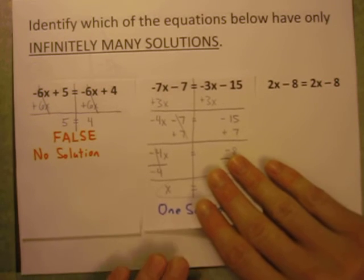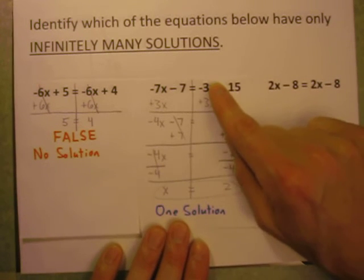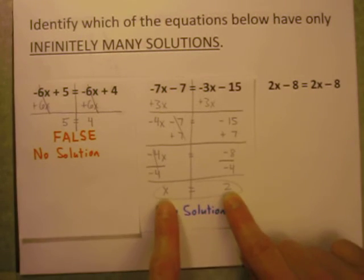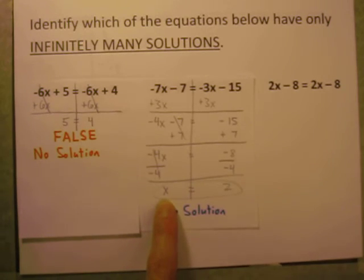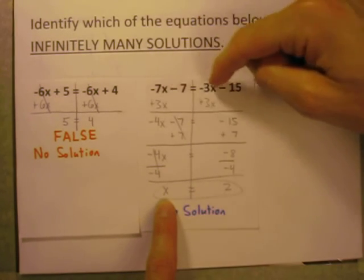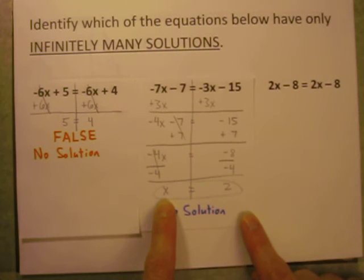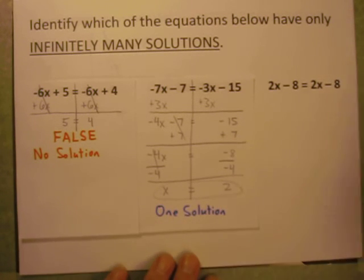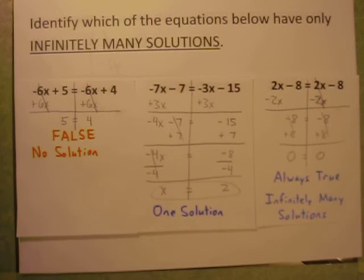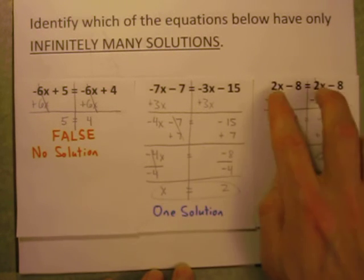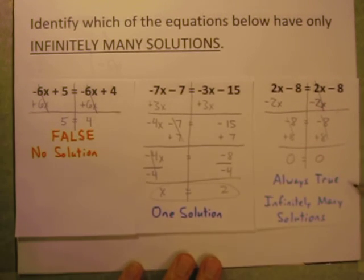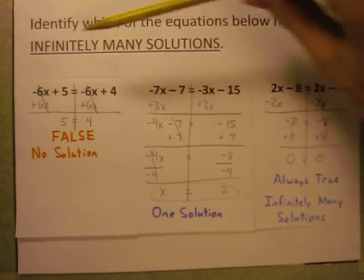When we solve the next one, if we get rid of the X's on the right and the numbers on the left, you end up with X equals 2. So of all the infinite possibilities of numbers you could choose, only 2 would make both sides of this equation the same — so this has just one solution. And finally, this last one: the X terms and numbers are the same, so the X's cancel, the numbers cancel, 0 equals 0 is always true, so that one has infinitely many solutions. I hope that helps you understand these equations with infinitely many solutions.